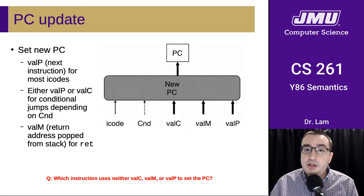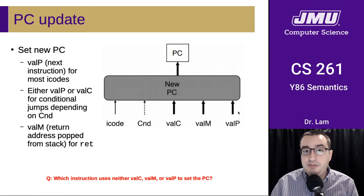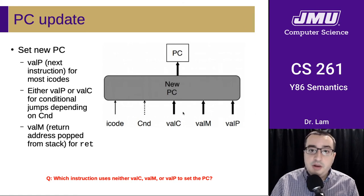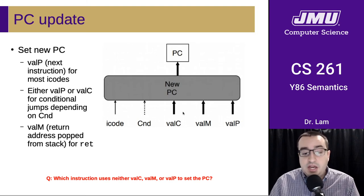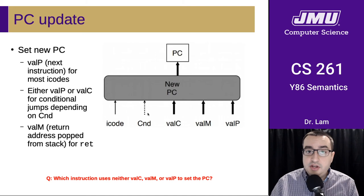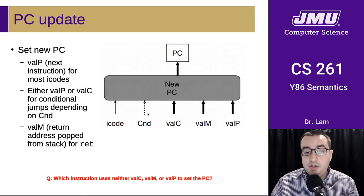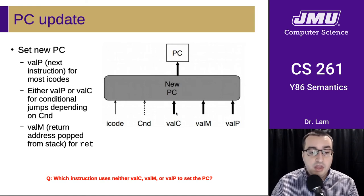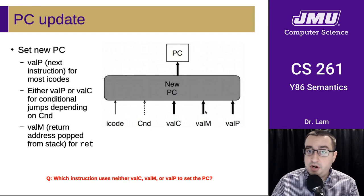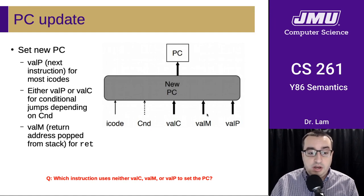Finally, we need to calculate the new PC, which involves taking all of these pieces and using the iCode to figure out which value we want to use as the next program counter. Sometimes this requires checking the condition value as well — for instance, if we're doing a conditional jump we need to know which one we're going to, so it's either ValC or ValP. Or if we're doing a return instruction, we may want to jump to the address stored on the stack, in which case we'd use ValM.